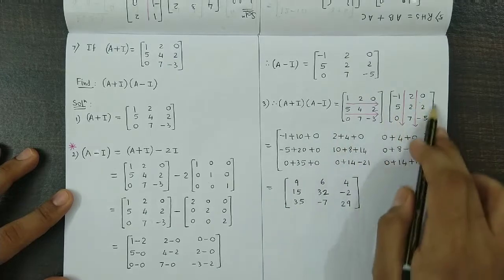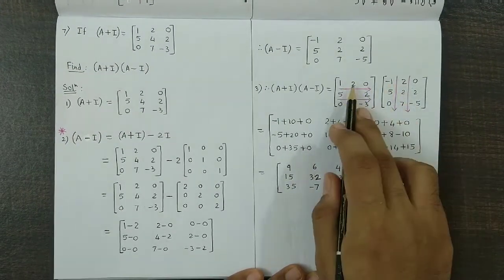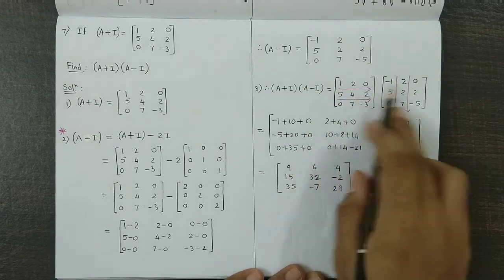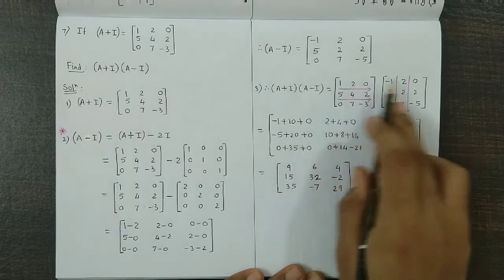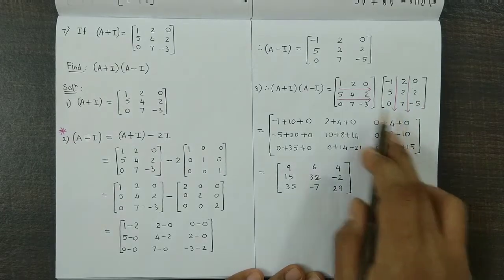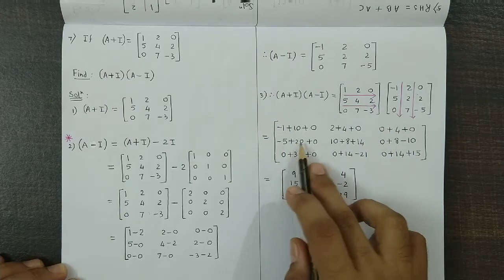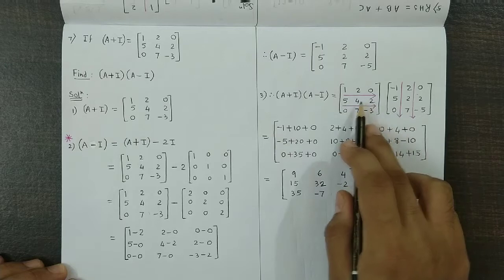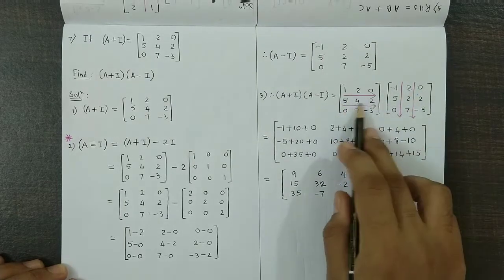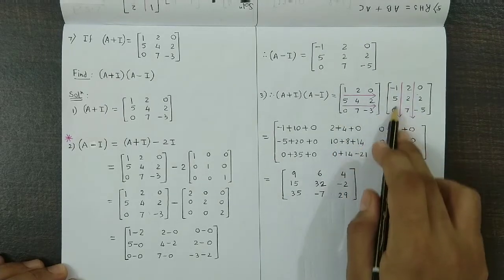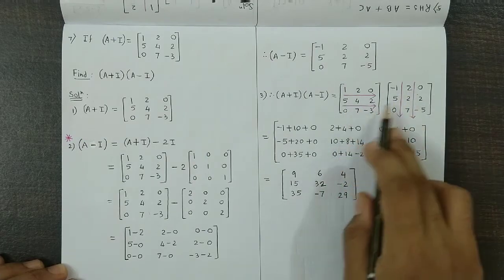This one is A plus I and this one is A minus I. We multiply rows with corresponding columns. R1×C1: -1+10+0; R1×C2: 2+4+0; R1×C3: 0+4+0. Then R2×C1: -5+20+0; R2×C2: 10+8+14 (i.e., 5×2=10, 4×2=8, 7×2=14); R2×C3: 0+8-10.